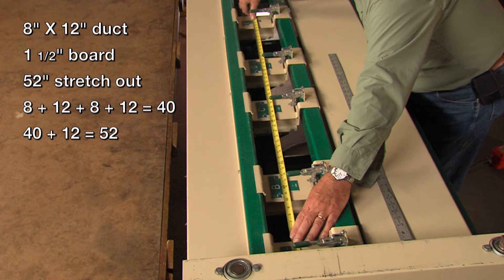For this 8x12 duct with one and a half inch board, we are looking for a 52 inch stretch out from the stop on the left to the cutoff tool on holder E. To get that number, we added the inside measurements: 8 plus 12 plus 8 plus 12, which equals 40, and add another 12 inches.